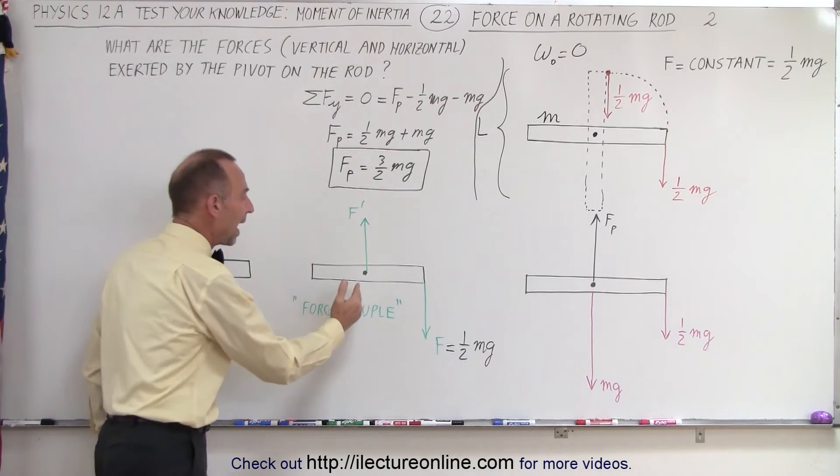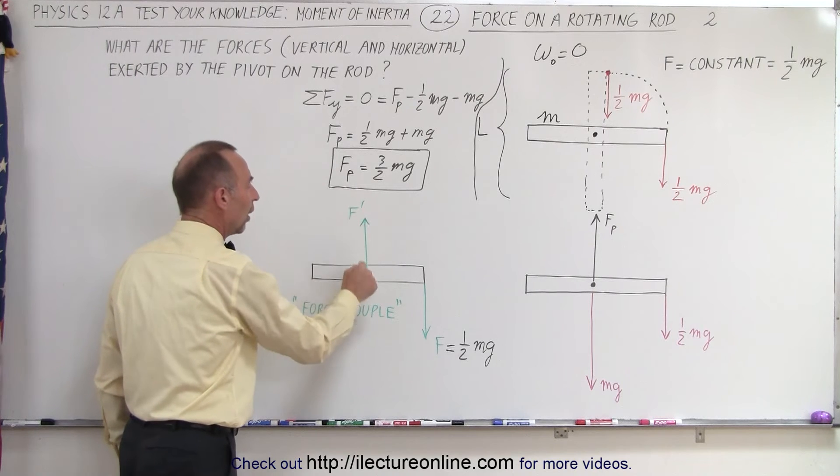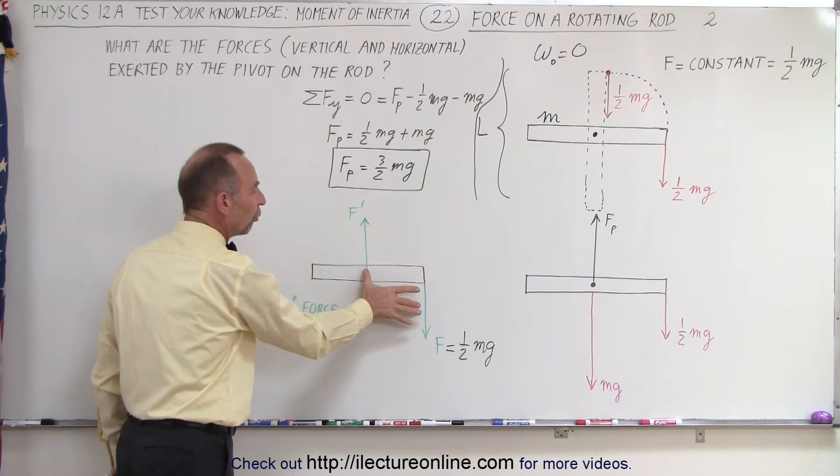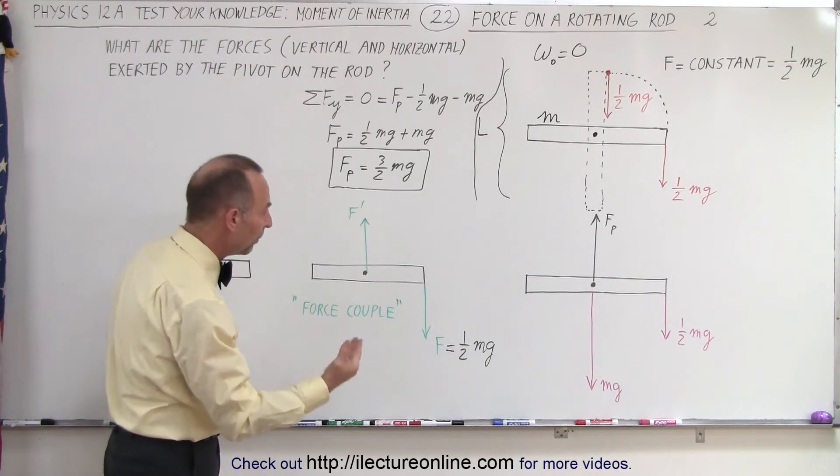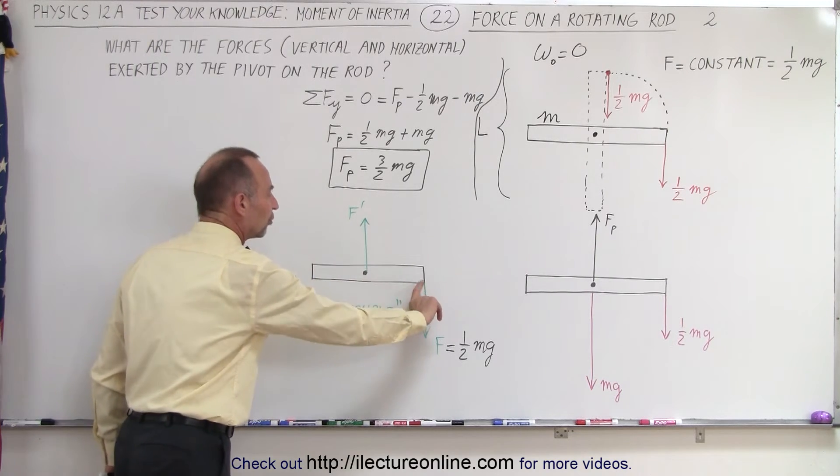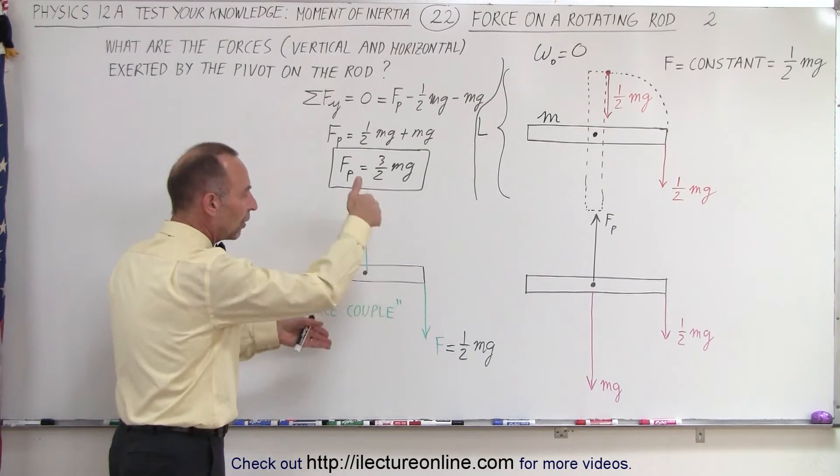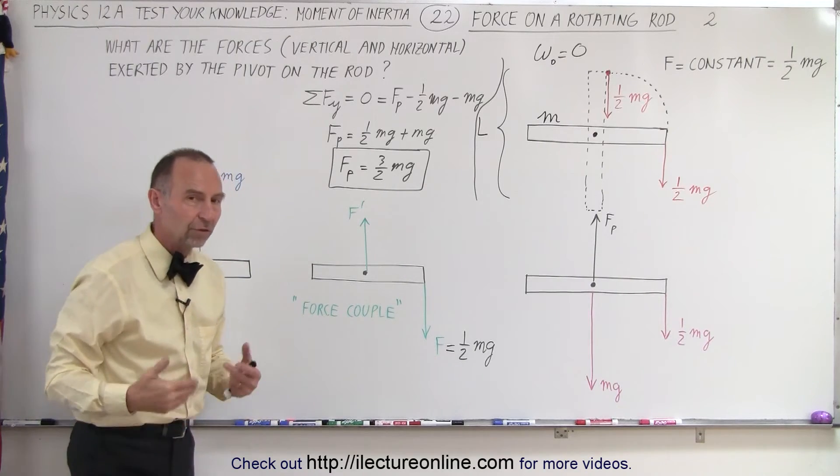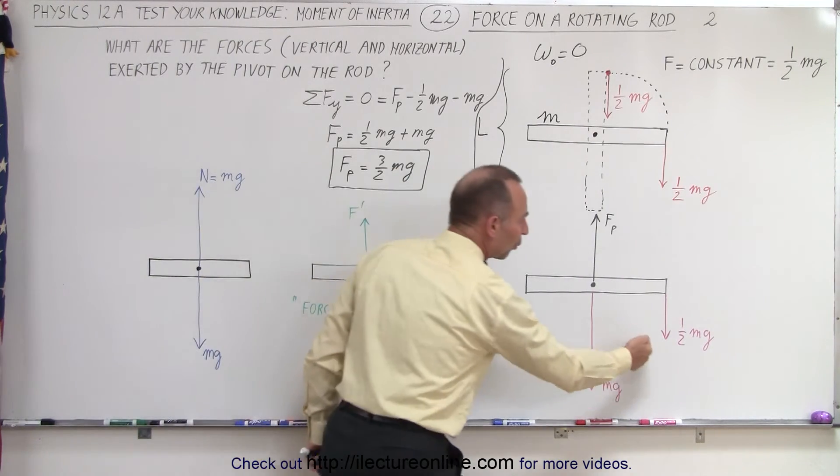there will be an opposing force acting through the point of rotation. And these two forces are what we call a force couple. That will always happen. The magnitude of the forces are equal.